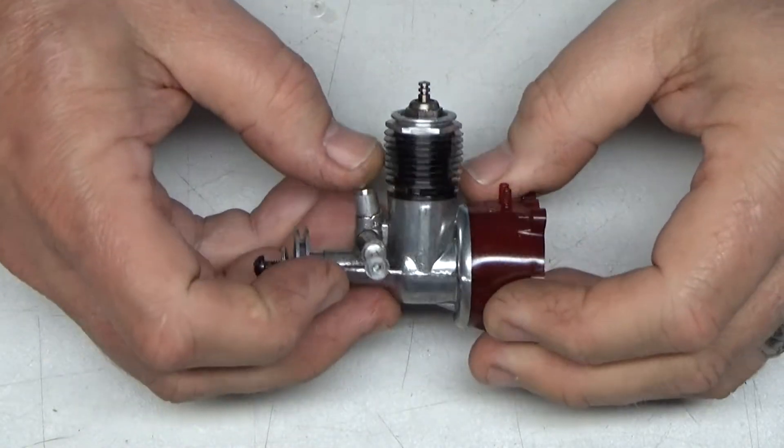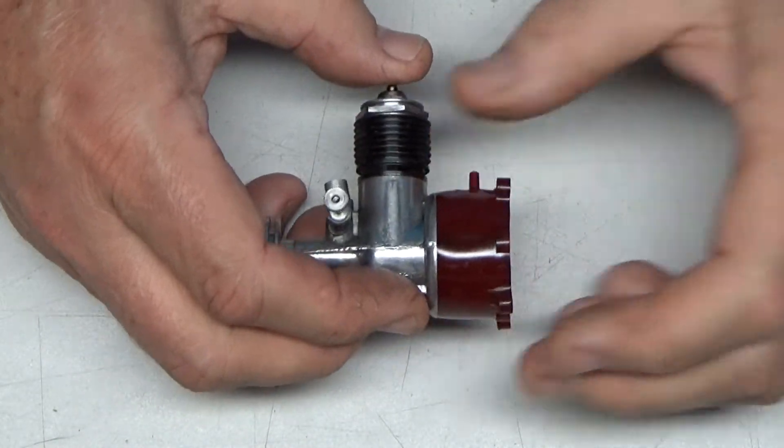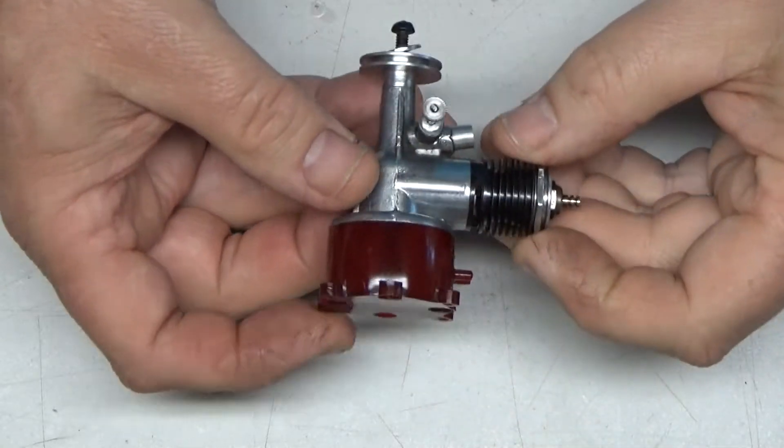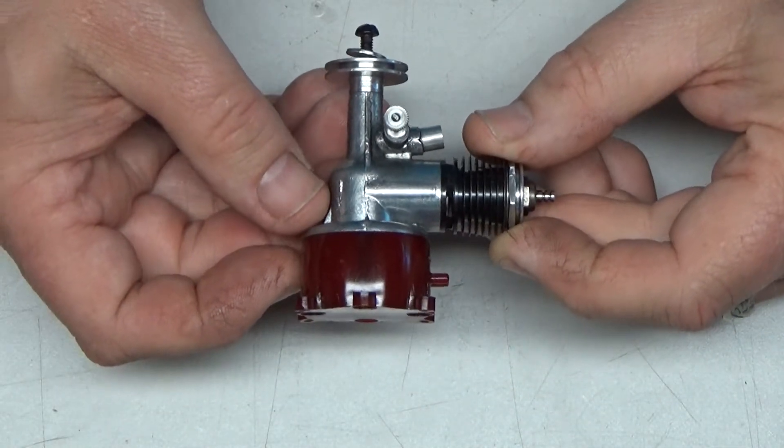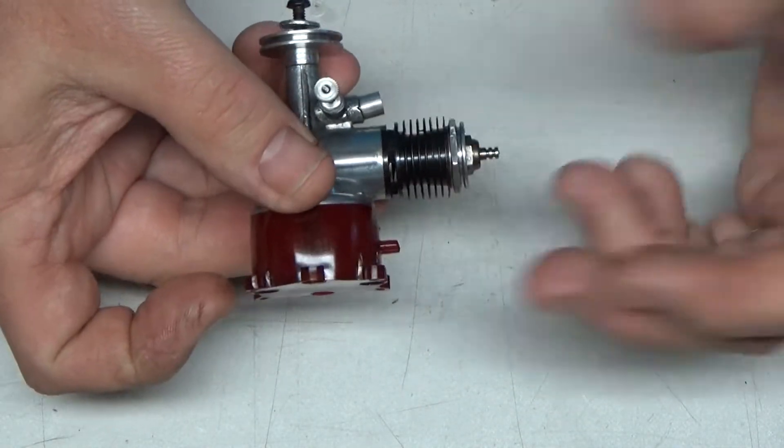Well, it turns out I've been in communication with Ted from OK Cubs, and it turns out this engine was initially sold on a Comet ready to fly airplane, and apparently it was mounted sideways.